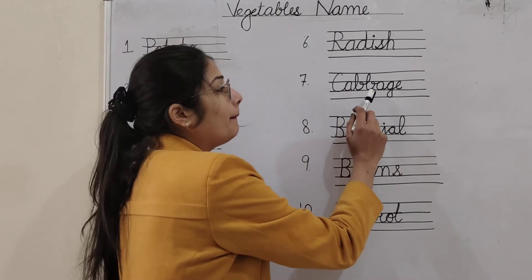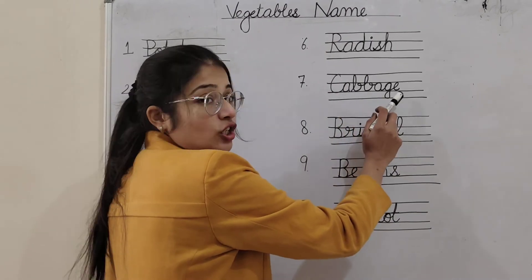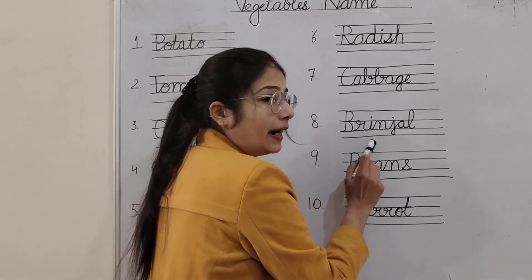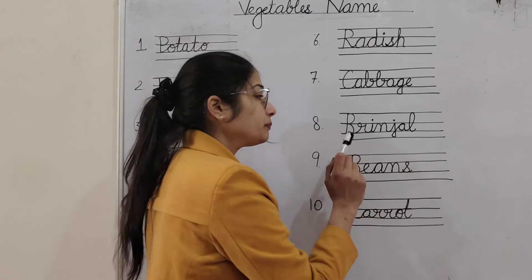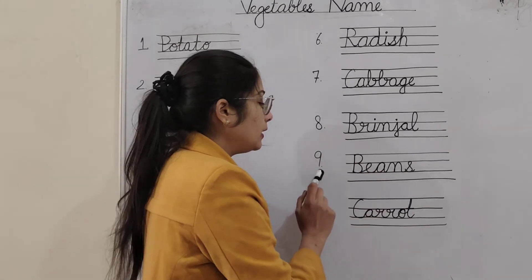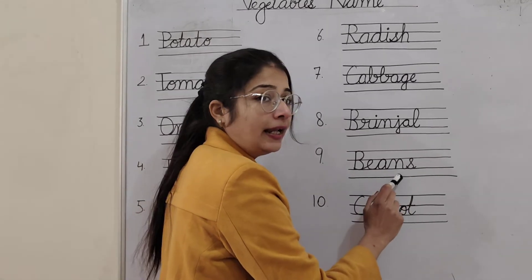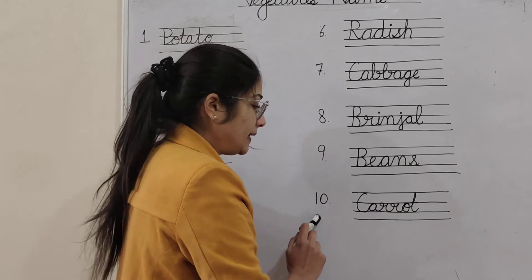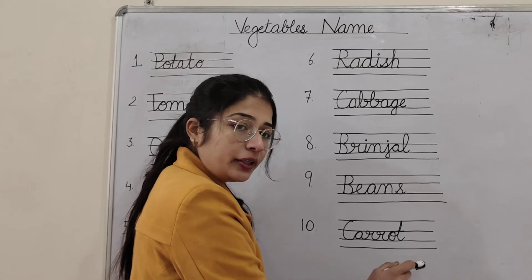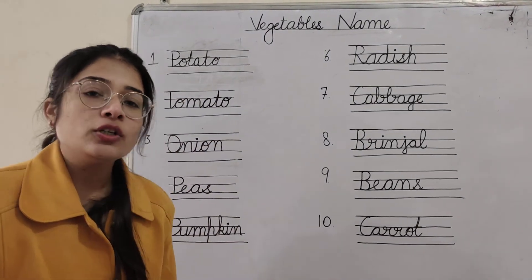Number 7 is cabbage. C-A-B-B-A-G-E. Cabbage. Number 8 is brinjal. B-R-I-N-J-A-L. Brinjal. Number 9 is beans. B-E-A-N-S. Beans. Number 10 is carrots. C-A-R-R-O-T. So these were your vegetables name.